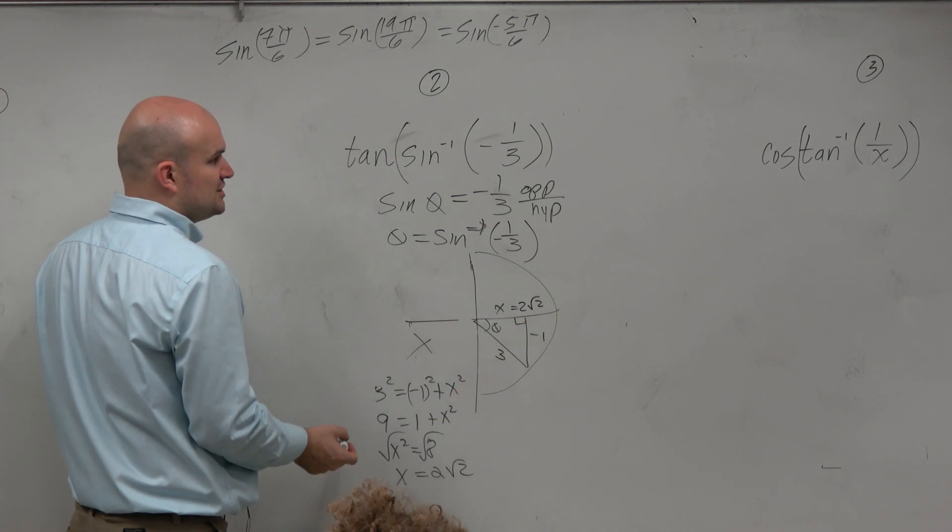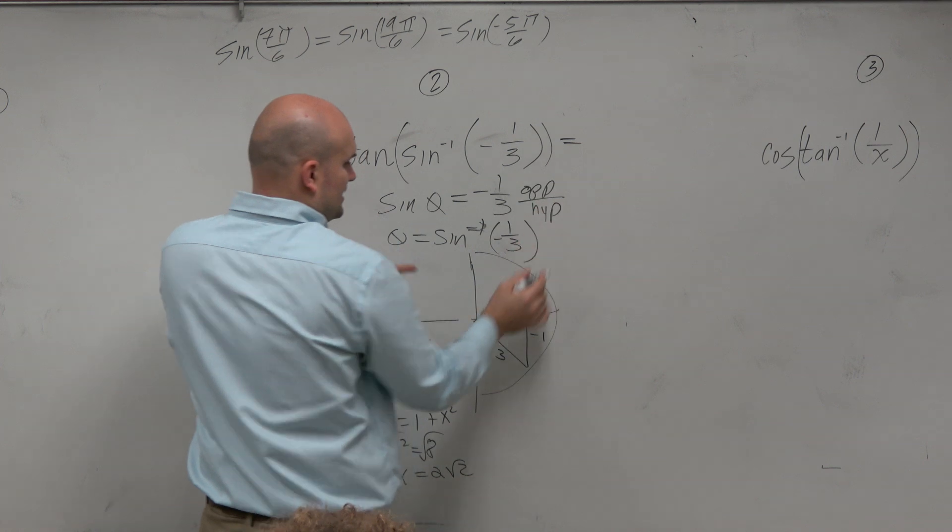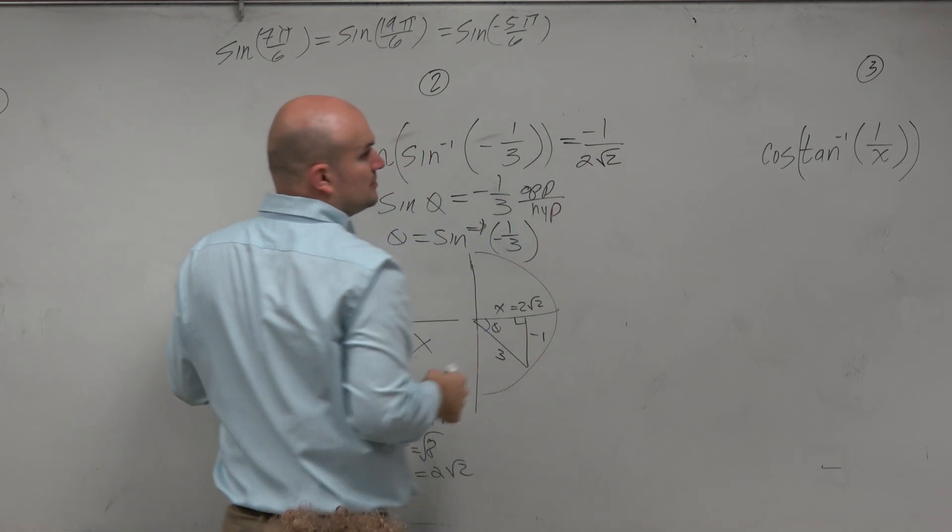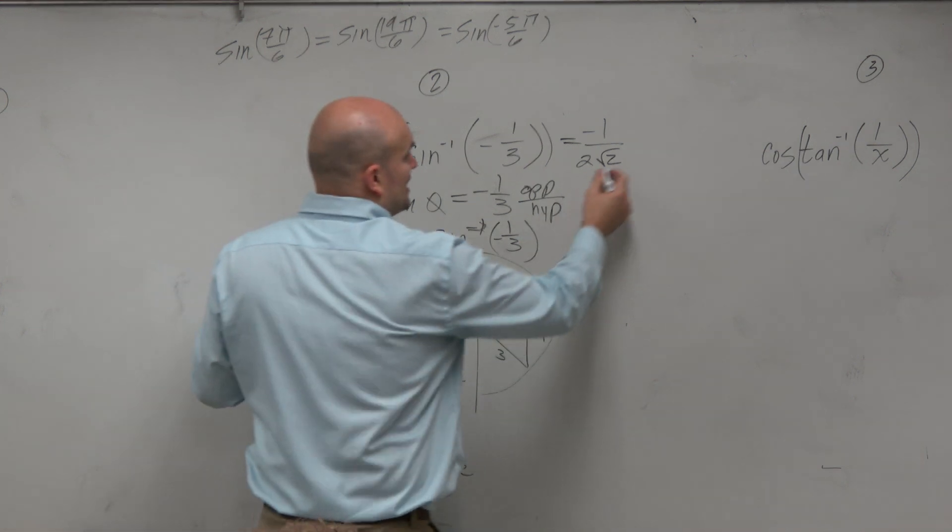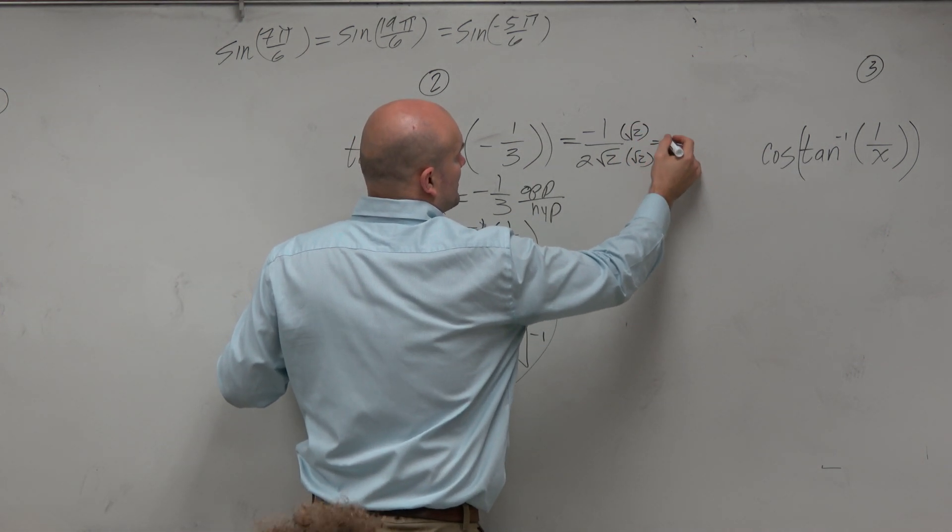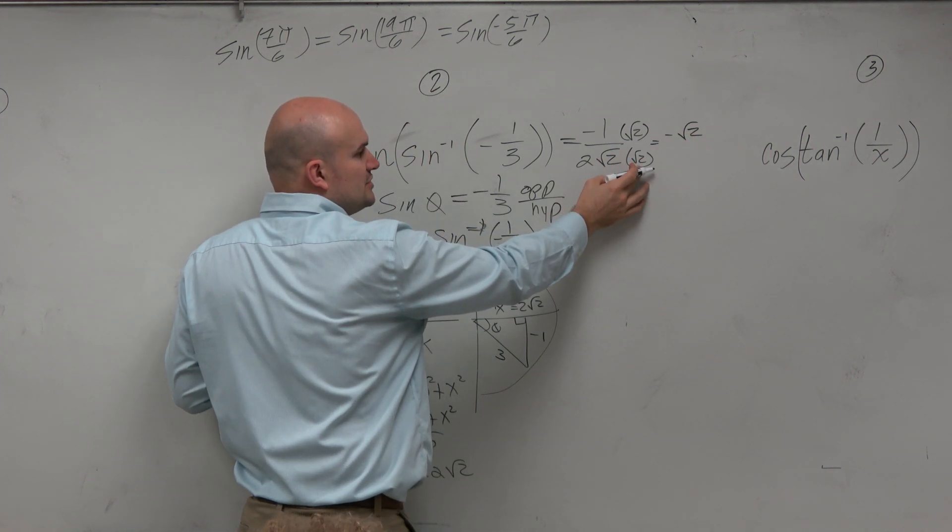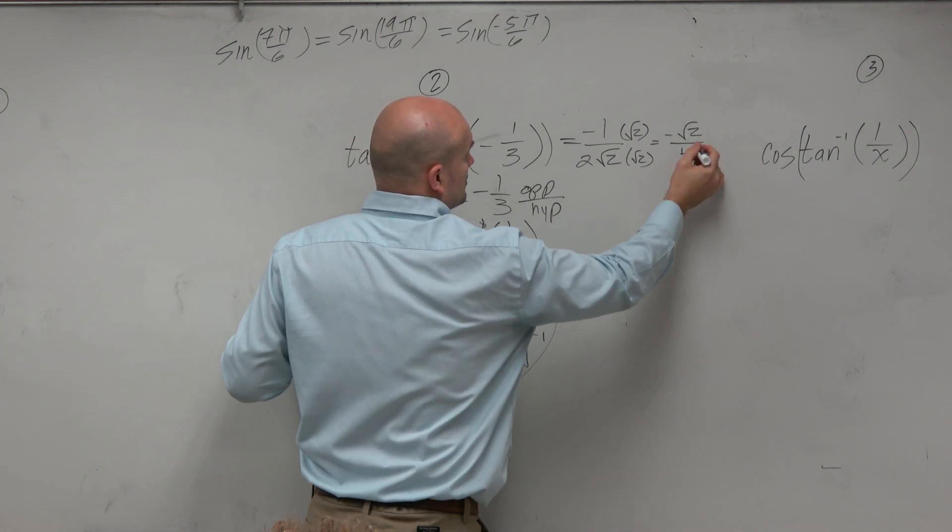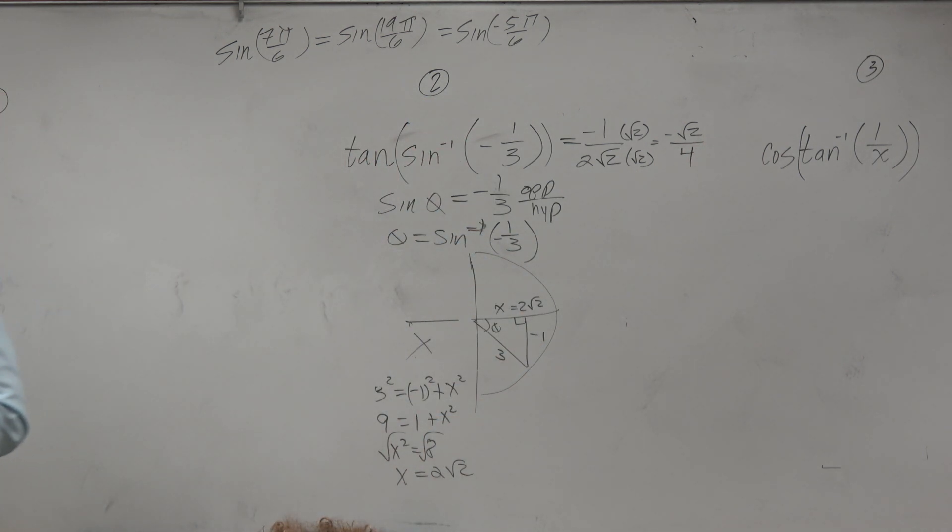So therefore, the tangent in this case is opposite over adjacent, negative 1 over 2 radical 2. And if I rationalize my denominator, I would get negative square root of 2. Square root of 2 times square root of 2 is 2. 2 times 2 is 4. Now, we can actually even get more abstract than that.